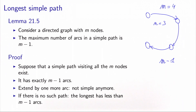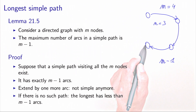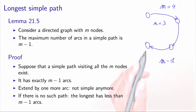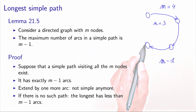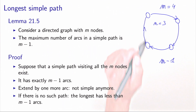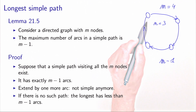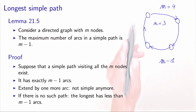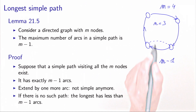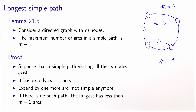Now if I want to consider a longer path, it has to start from this node and go to one of the nodes of the graph. But then it's not a simple path anymore. Either it becomes a cycle, or if I go to a different node, one node is repeated. So it's not simple anymore. Whenever we extend by one more arc this path, the generated path is not simple anymore.